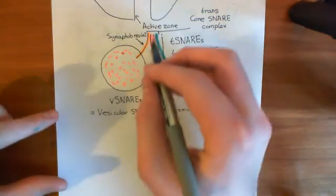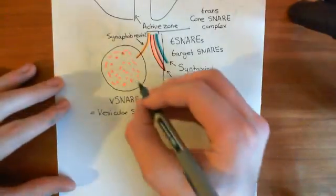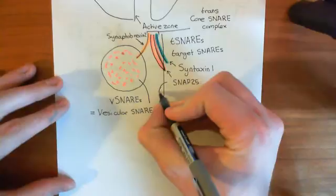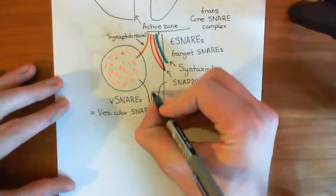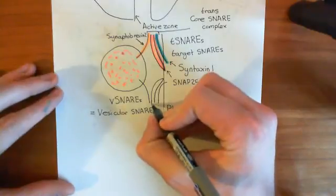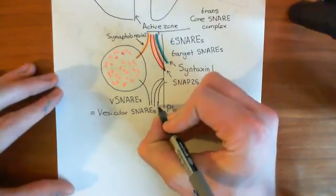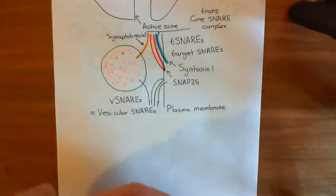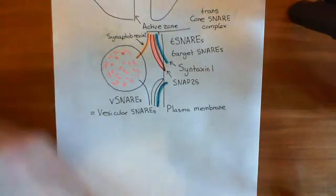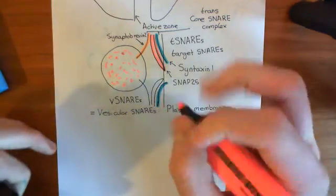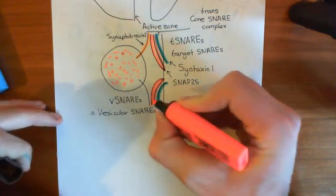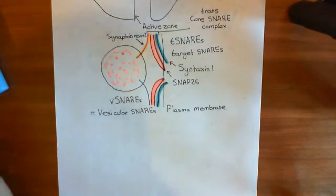You don't just form one of these core SNARE complexes; instead you form multiple. In blue is syntaxin-1, in red is SNAP-25, and in orange is synaptobrevin-2, and these four alpha helices run parallel and intertwine with each other to form this bundle.